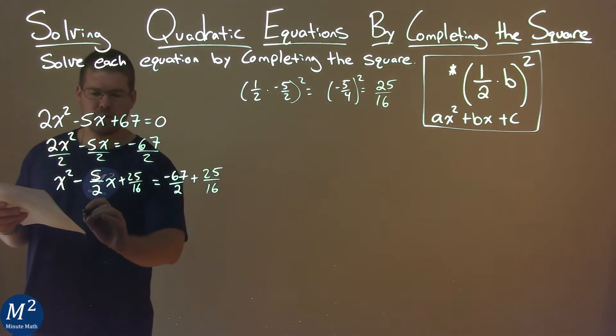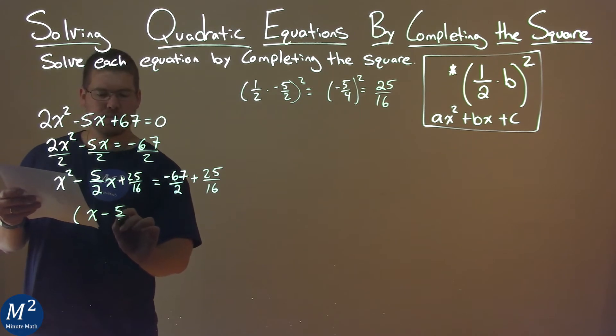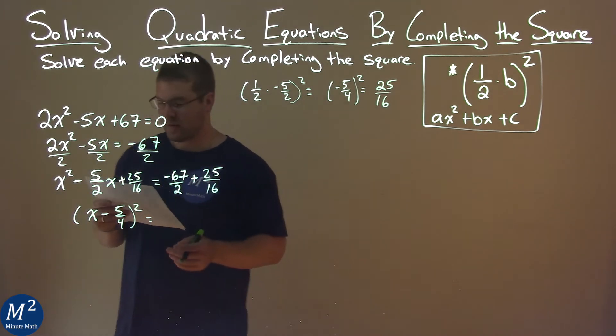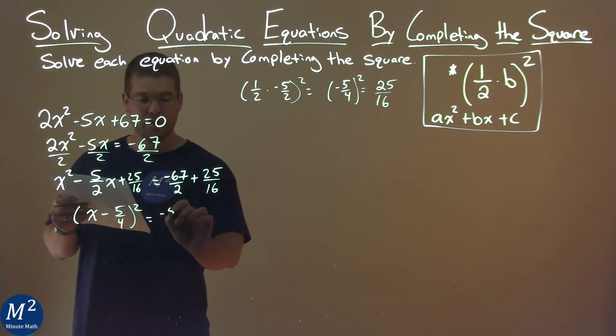The left-hand side is a perfect square of x minus 5 fourths squared. The right-hand side, when added together, comes out to be negative 511 over 16.